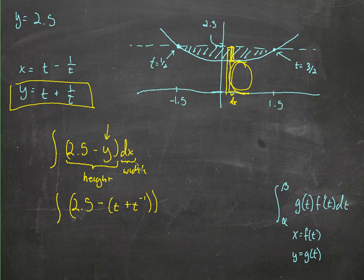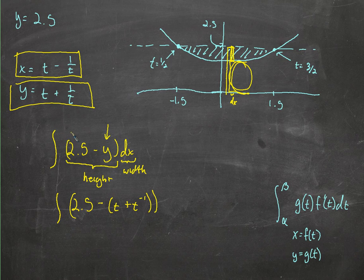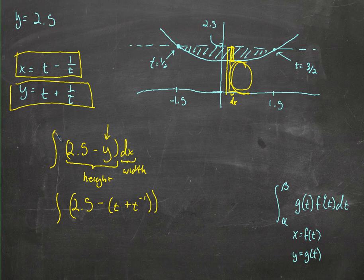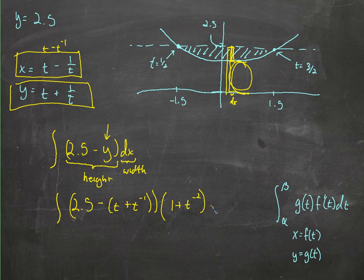And then we've got this dx, the width, the very, very small change in x. How do we figure out how big that change is? How do we calculate that? We take the derivative of the x function of x as a function of t. And then if we know something about t or the change in t, then we can figure out x or the change in x. So then we multiply that by, and it does this as t minus t to the negative 1. So we've got 1 plus t to the negative 2 dt.